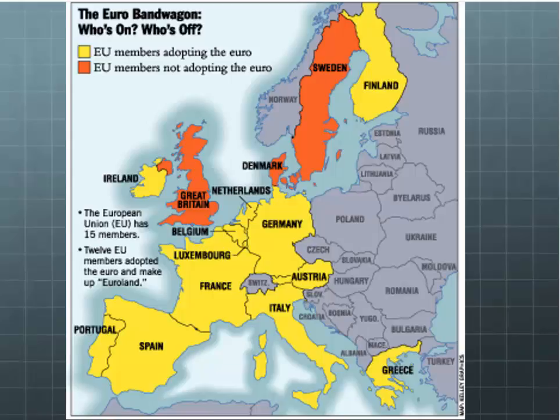Imports, once inside the Union, can be bought and sold anywhere within the EU borders. Something imported into Spain incurs a tariff at that point, but there's no additional import tax if that product then moves from Spain to Italy. All EU countries were supposed to follow strict limitations on immigration and the importation of goods.